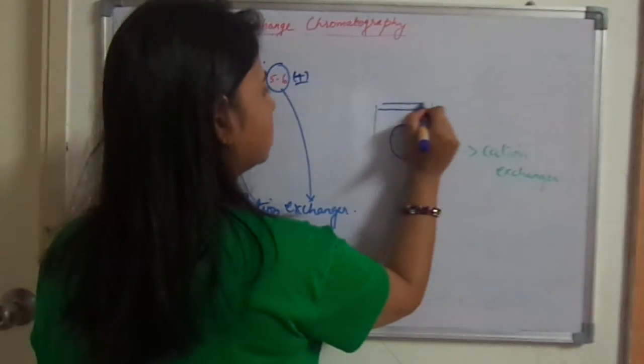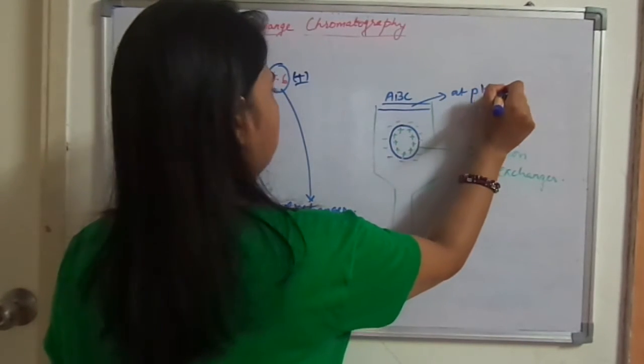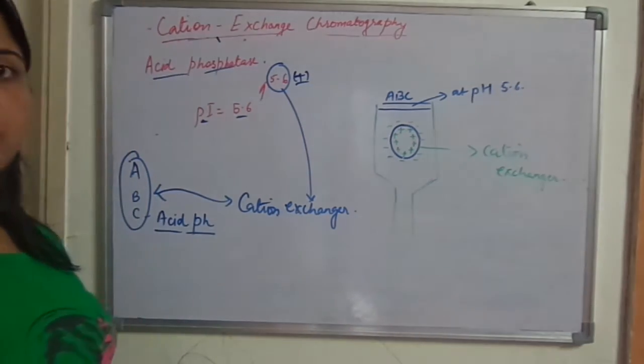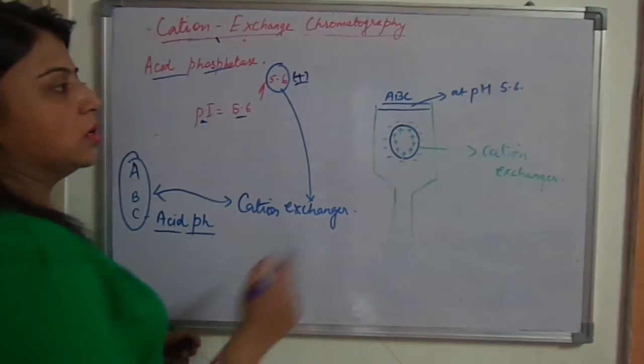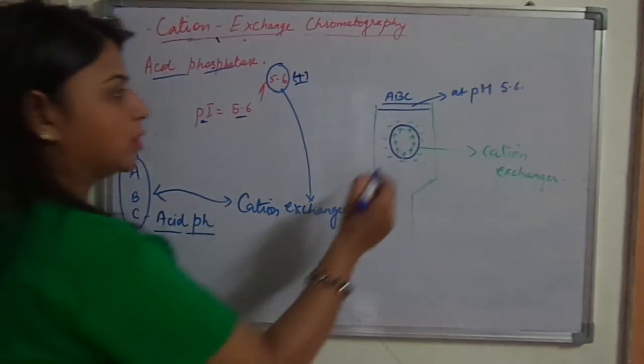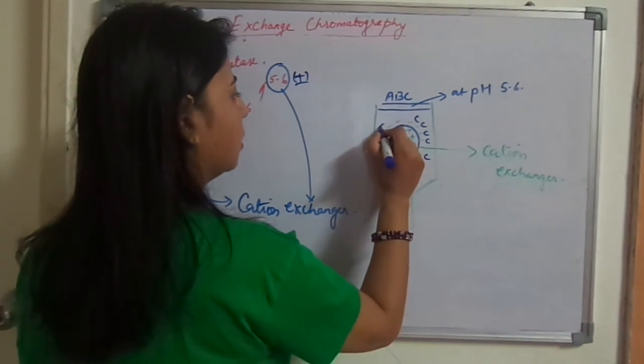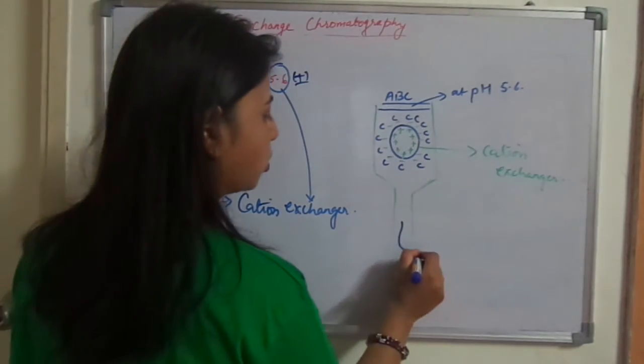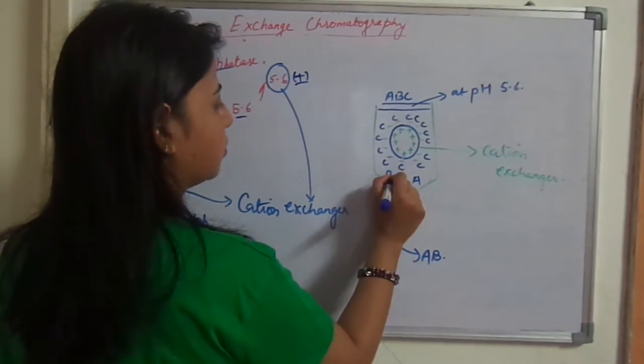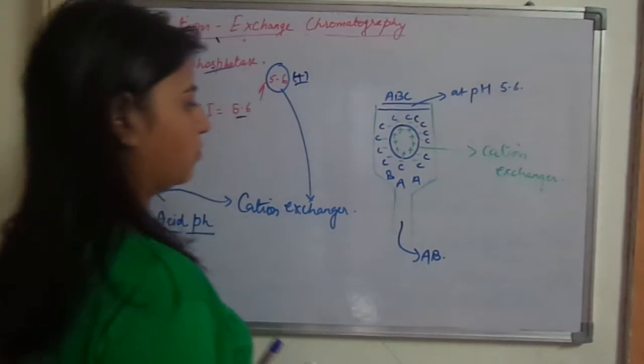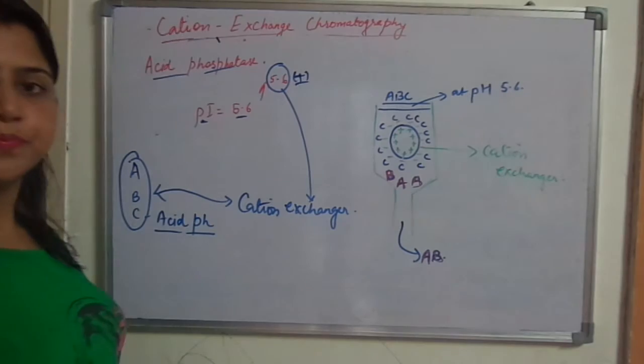Now in the second step you will apply the sample ABC at pH 5.6 over here. Among these I am not considering A and B. Let us consider only C. This C is positively charged. So what will happen? This C will come and it will bind because it is positively charged. And what about A and B? A and B will be either eluted out or they will remain somewhere over here.